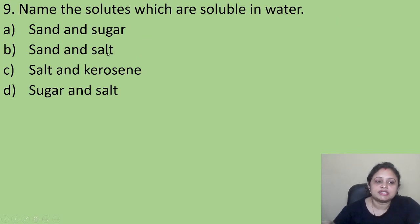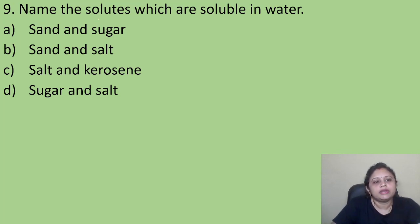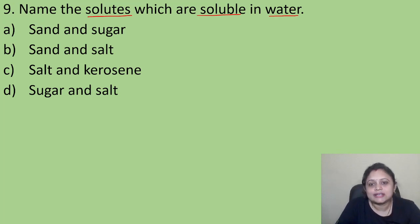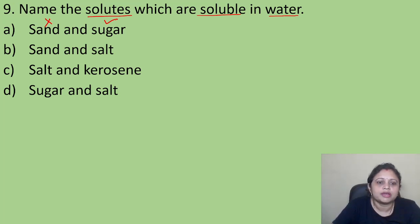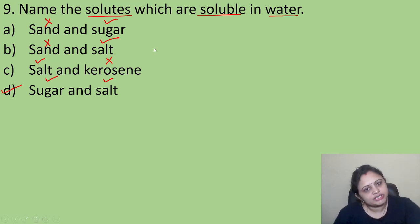Coming to the next question: name the solutes which are soluble in water. Option A: sand and sugar. Option B: sand and salt. Option C: salt and kerosene. Option D: sugar and salt. Sand is not soluble in water. Sugar is soluble in water. Salt is also soluble in water. Kerosene is not soluble in water. So sugar and salt are both soluble in water — the correct answer is Option D.